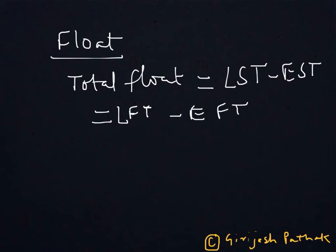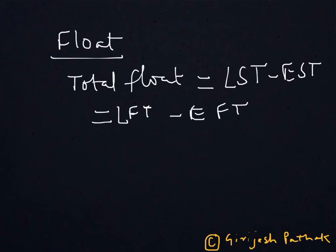For various situations some other types of float are useful. For example, if the situation is such that this activity cannot be delayed to the extent that the earliest start of the subsequent activity is disturbed, then there is a restriction that this activity cannot go beyond the earliest time of the next event. This kind of float is called free float.